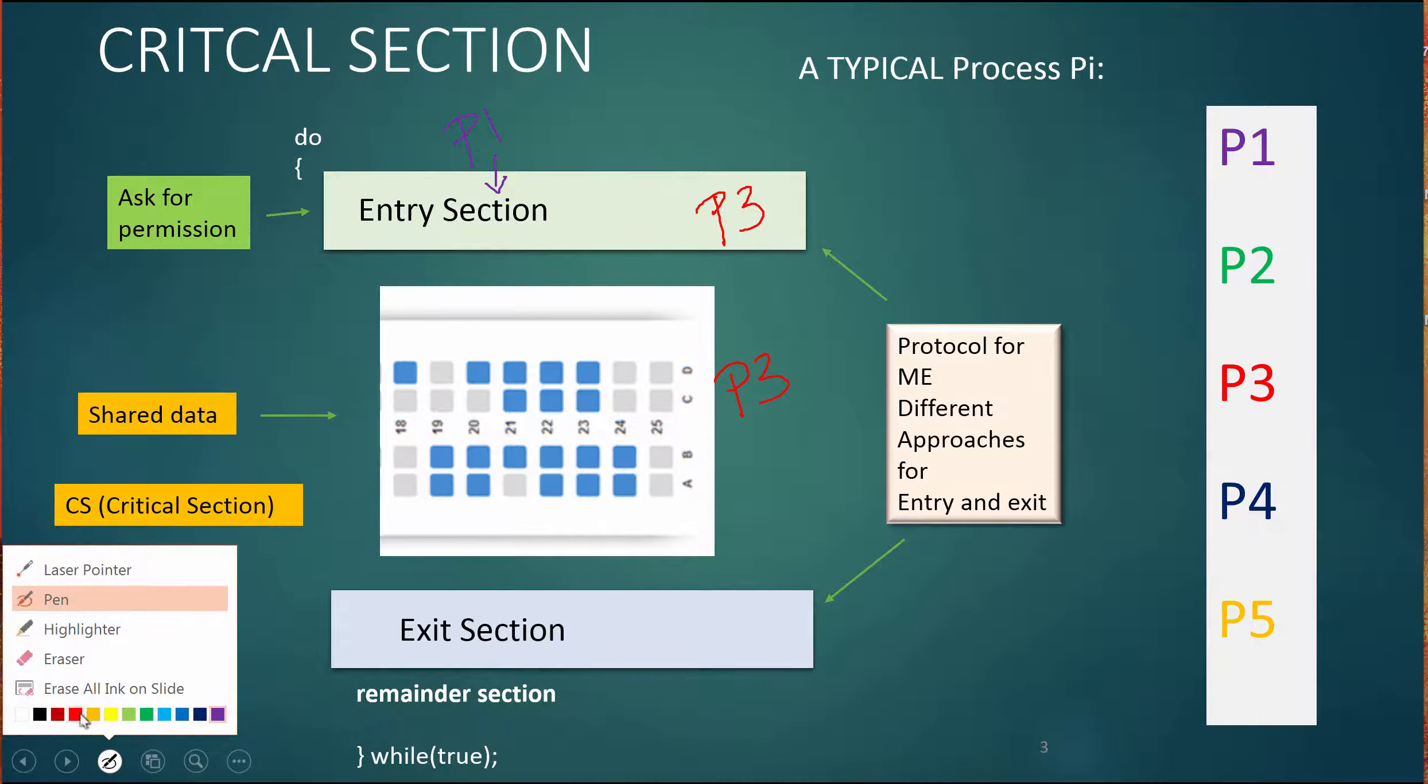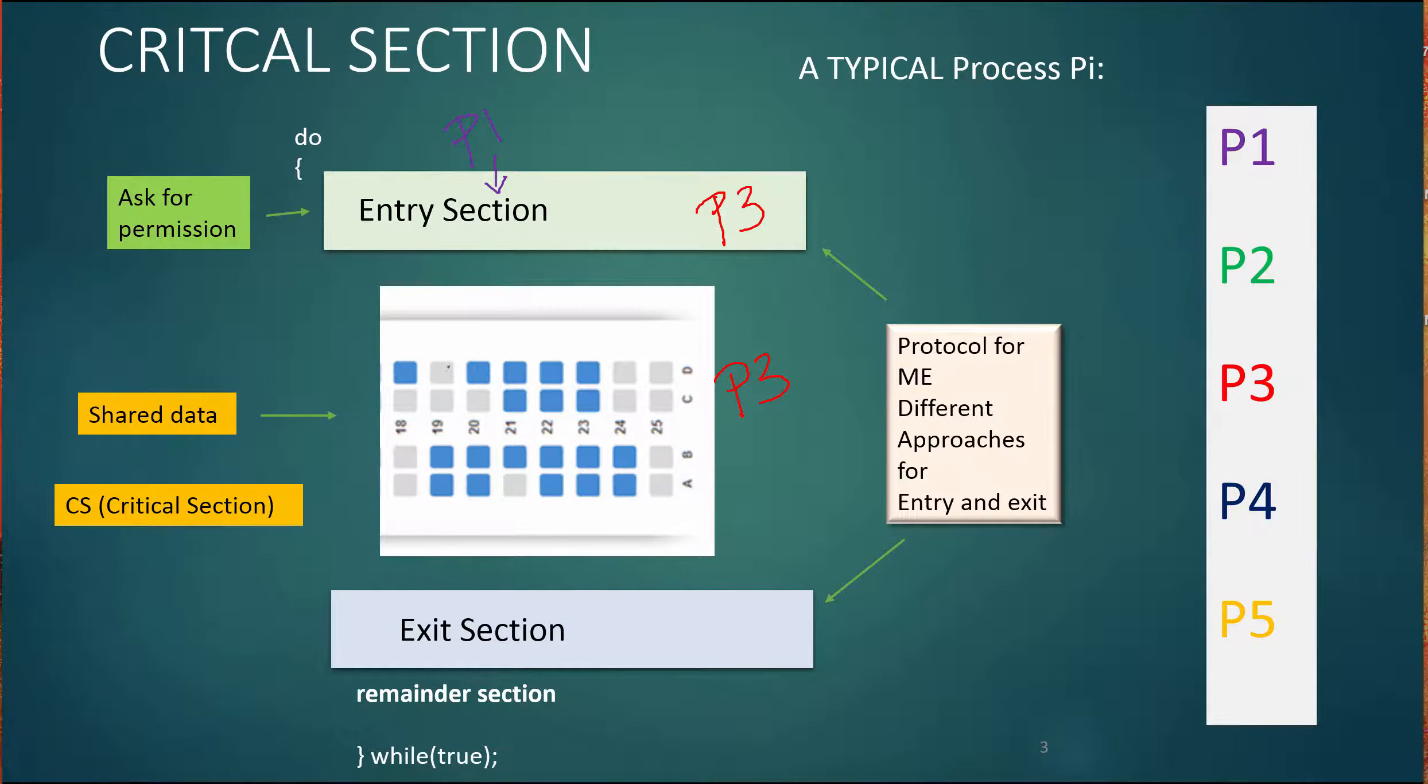Meanwhile, P3 is in there and P3 goes and finds the seat, books the seat, and after that seat is booked, sets the flag that that seat has now been booked. And then P3 will then run the exit. And when P3 runs the exit, then whichever process was waiting to enter will be able to go in and enter.